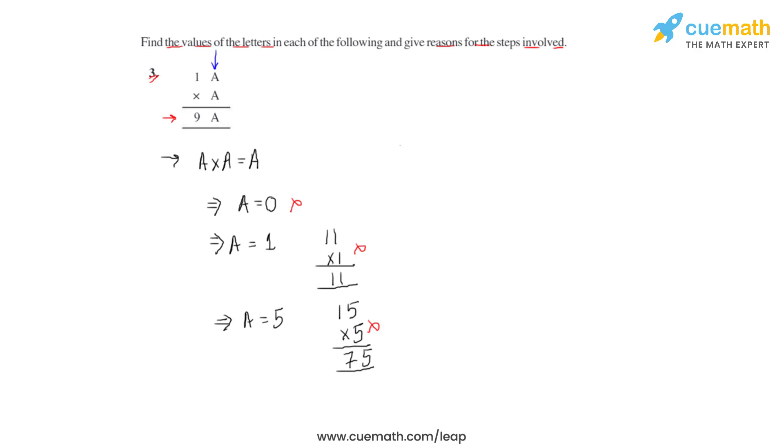Let us now consider the value of a to be 6. If the value of a is 6, we'll have 16 times 6 and the result of this product would be 96, where we see that we definitely have the 9 at the 10th place.